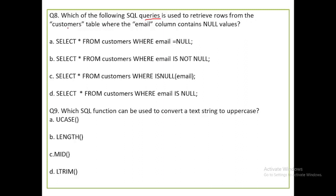Which of the following SQL queries is used to retrieve rows from the CUSTOMER table where the email column contains null values? You need to access only the rows where the email column is null. Option D — SELECT * FROM customer WHERE email IS NULL — is the correct answer. Using IS NOT NULL would retrieve non-null values, which is wrong.